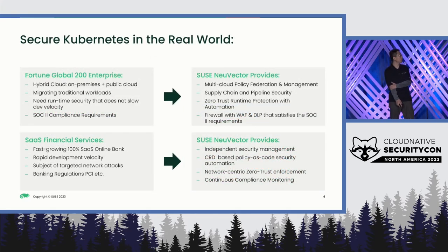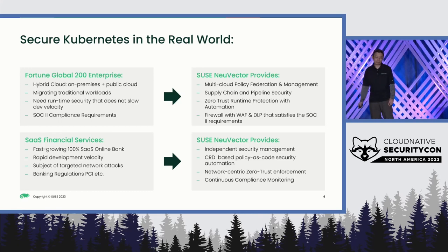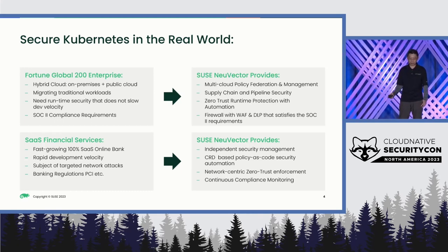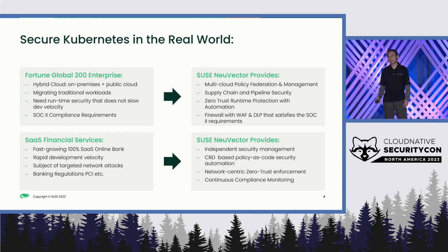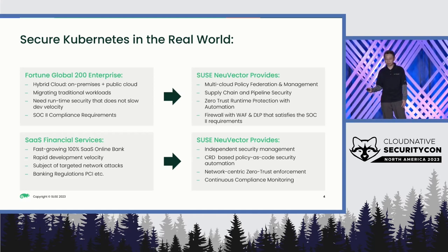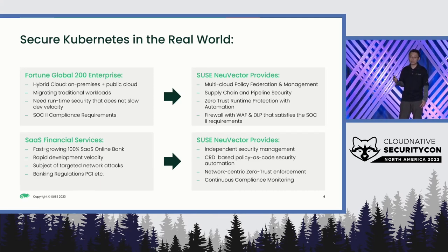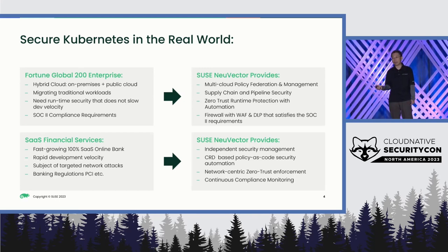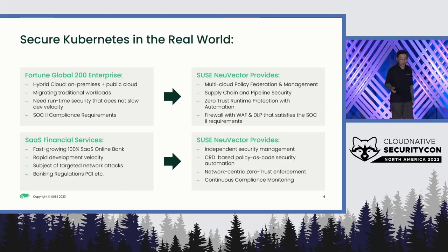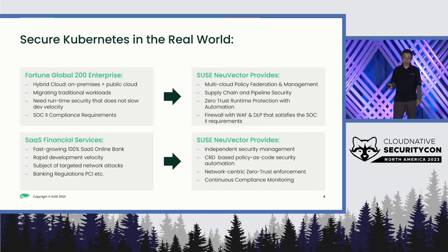I would like to use two real customer profiles to emphasize that runtime zero trust security control is very important. One customer is a Fortune 200 enterprise; another is a fully SaaS-based financial service online bank. Interestingly, they both run their containers in multiple complicated cloud environments — cloud, hybrid cloud, multiple cloud, on-prem, or even air-gapped environments. This does require security to be managed and scaled the same way, so multi-cluster federation and security management need to be supported.